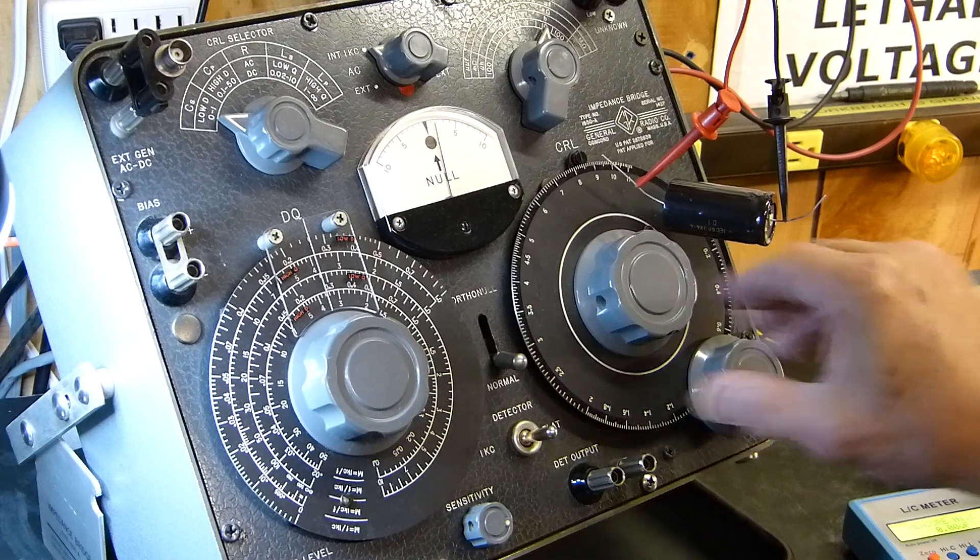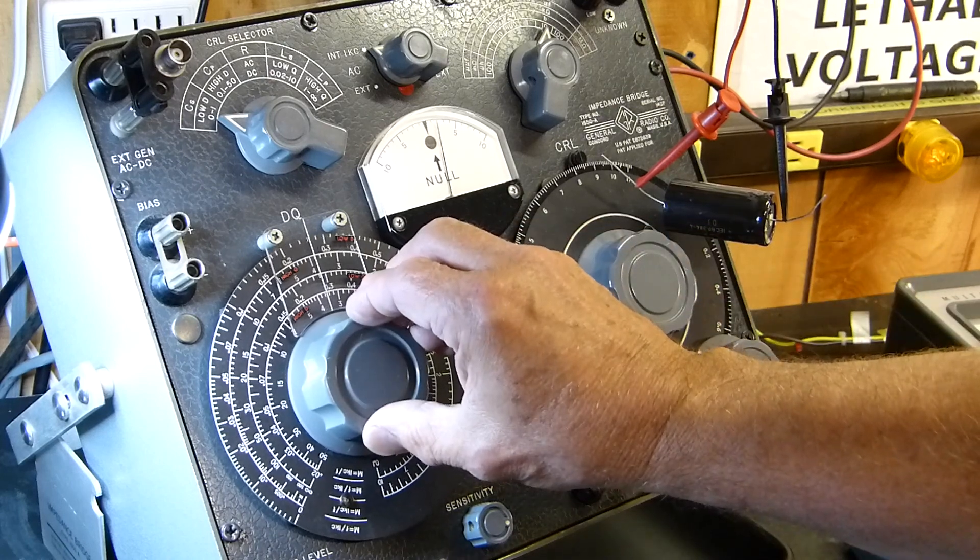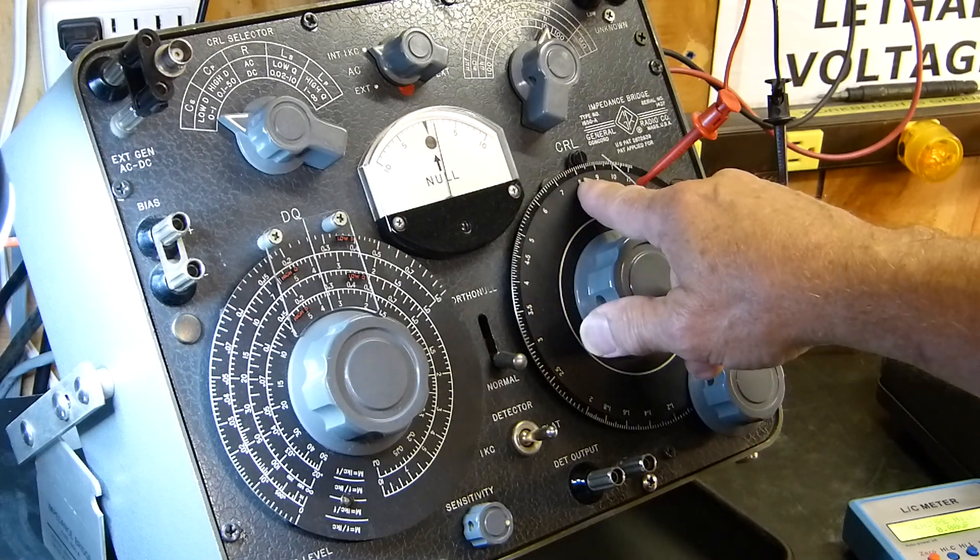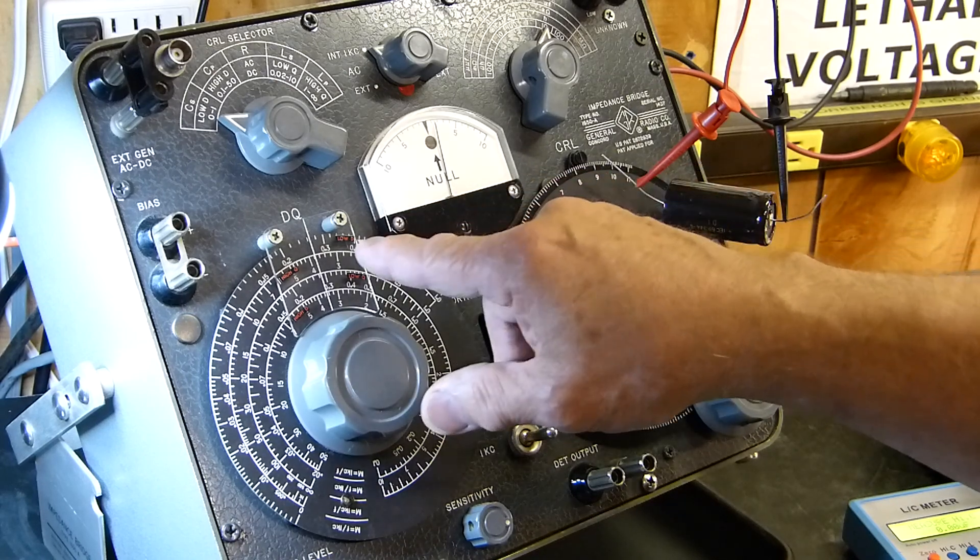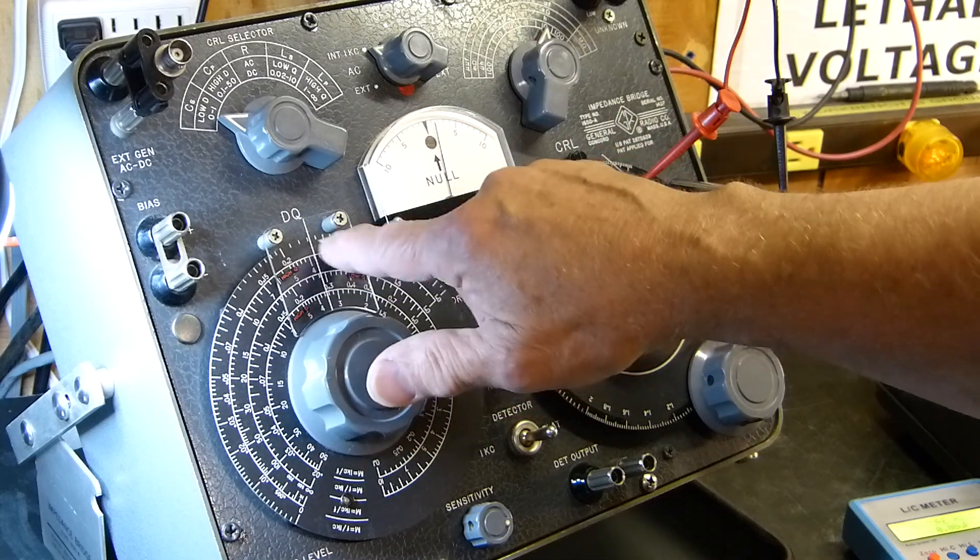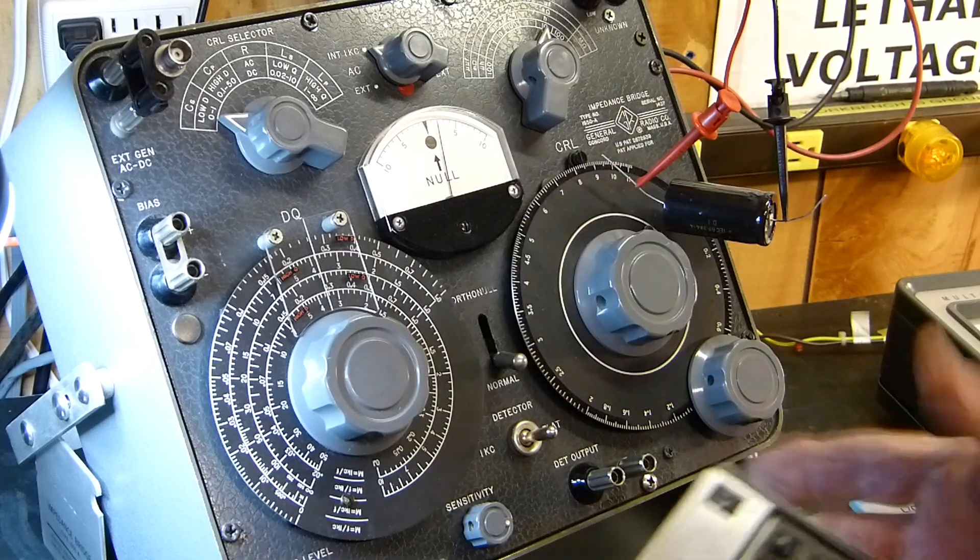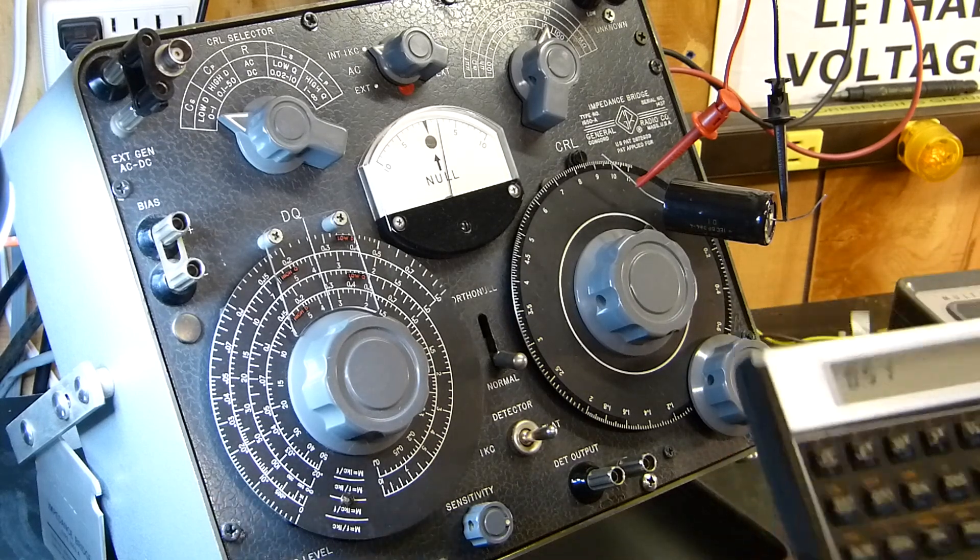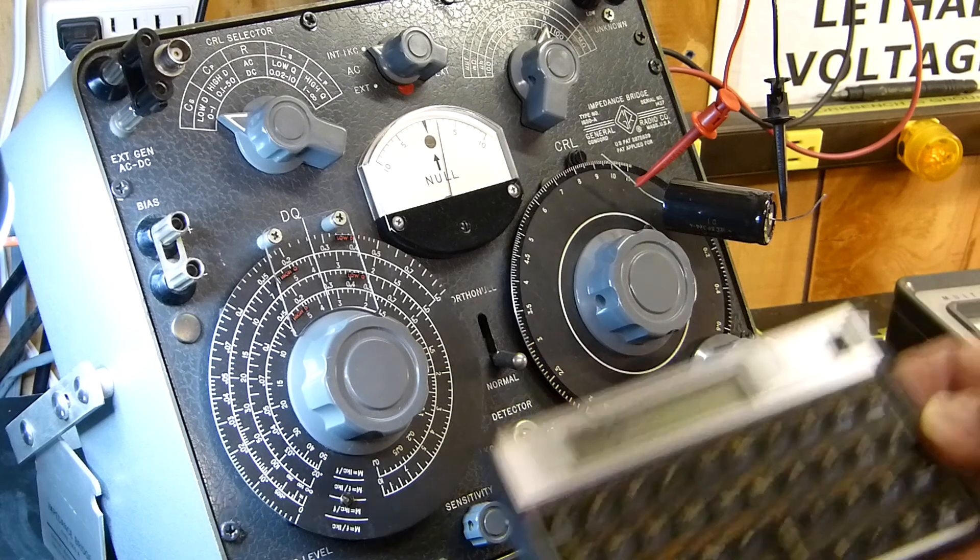Then you go back here and read its dissipation factor, and you keep going until you get it all tweaked in until the null is as perfect as you can get it. Okay, then we read it off and it's reading eight and a half, so it's 85 microfarads. And the dissipation factor is about 0.26.